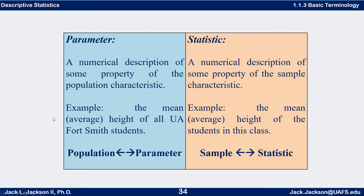A parameter is a numerical description of some property of the population characteristic. For example, after measuring the heights of all UAFS students, we could average them — add them up and divide by how many there are — to find the mean, or arithmetic mean, or average height. That would be called the population mean, which is a parameter.